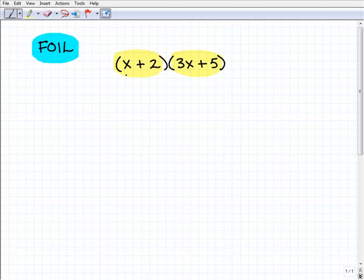So first, this first one here has x plus 2, has two terms, therefore it's a binomial. Second one has 3x plus 5, that's a binomial. Now, one thing to stress is that this FOIL technique only works when you're multiplying two binomials.